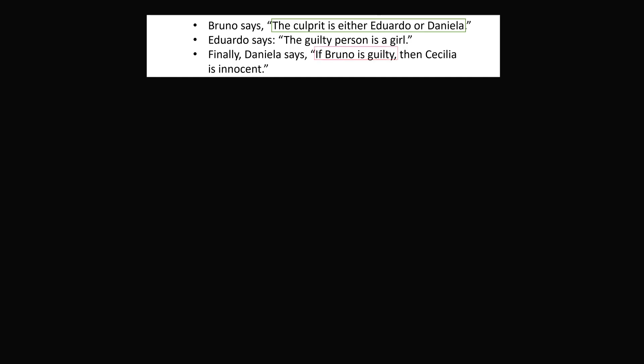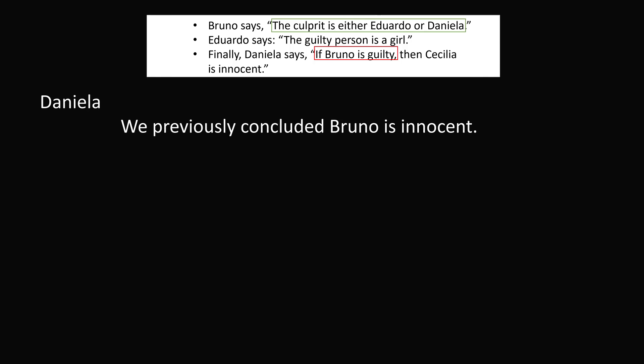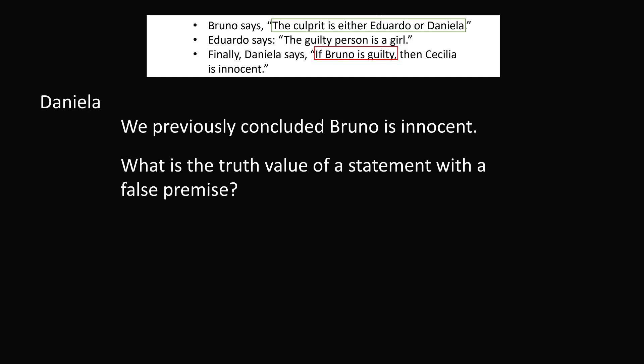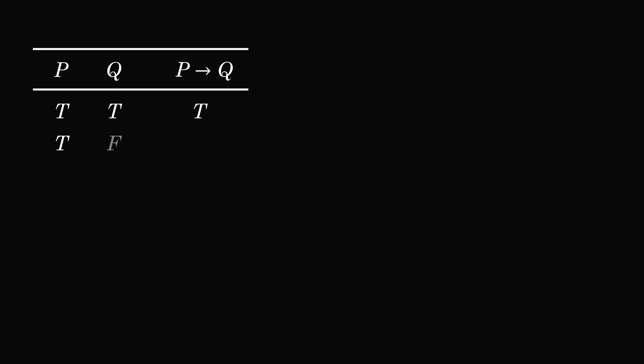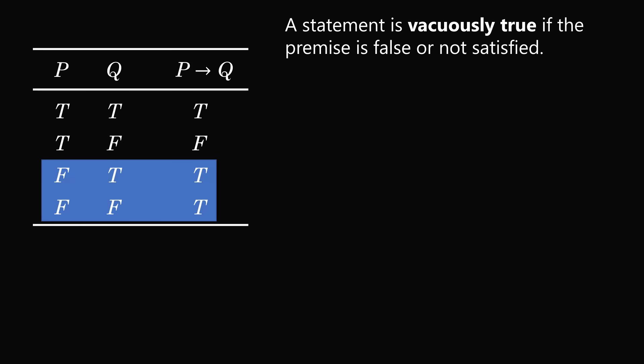So we now look at Daniela's statement. Daniela says that if Bruno is guilty, then Cecilia is innocent. We previously concluded that Bruno is innocent and is telling the truth. So what is the meaning of the statement 'if Bruno is guilty, then Cecilia is innocent'? What is the truth value of a statement with a false premise? To handle this case, let's look at a truth table of P, Q, and 'if P then Q.' There are four different cases to consider, and for our puzzle we focus on the case when P is false. Notice that if P is false, we always have a true statement for 'if P then Q,' regardless of the truth value of Q. A false premise will always imply a true statement. A statement is vacuously true if the premise is false or not satisfied.